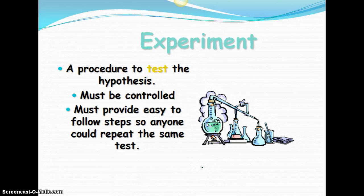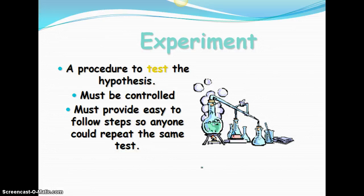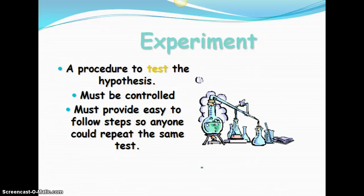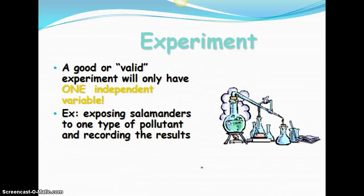Our next step is the experiment. This is a procedure that will test the hypothesis. It must be controlled. I'll explain what that is on another slide. And it must provide easy to follow steps so that anyone could repeat the same test, including yourself. In order to be a valid experiment, you need to be able to retest it. And somebody else needs to be able to see that they could retest it as well to see if those results are valid. A good or valid experiment will have only one independent variable. An independent variable is what you change as the scientist. So an example, exposing salamanders to one type of pollutant and recording those results.